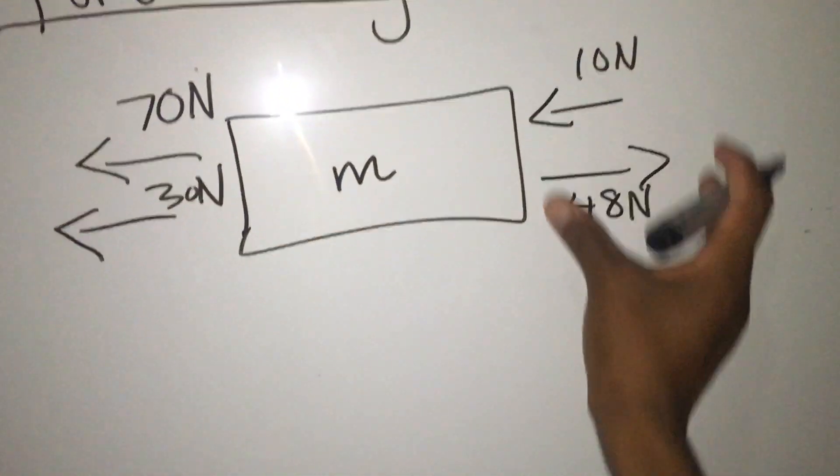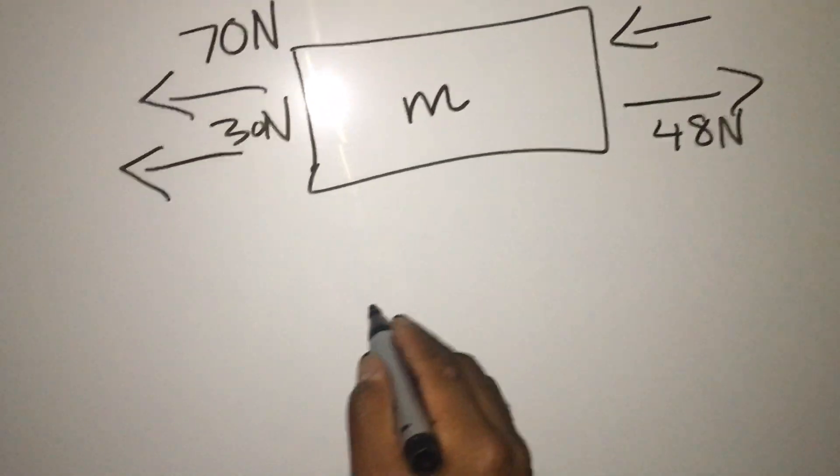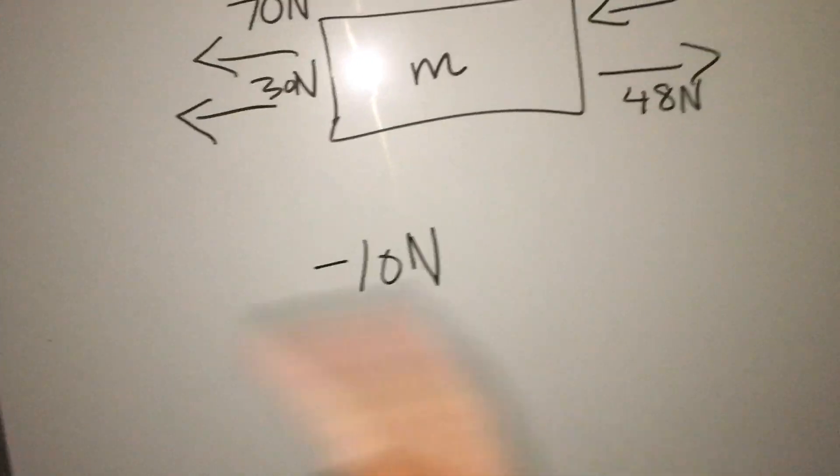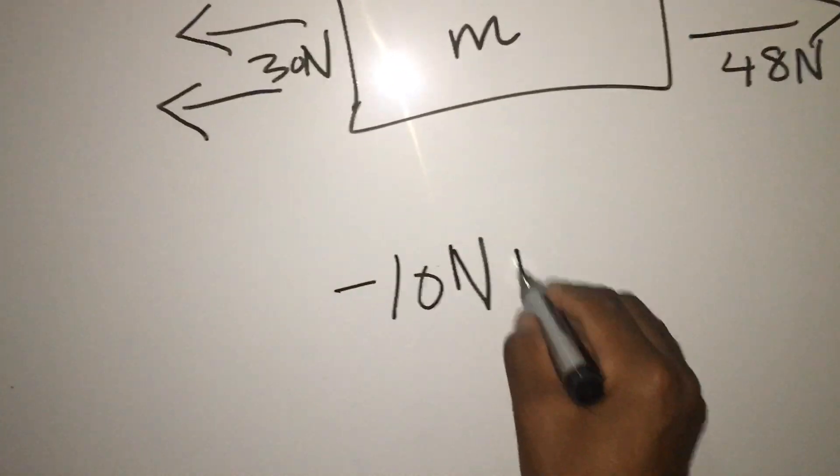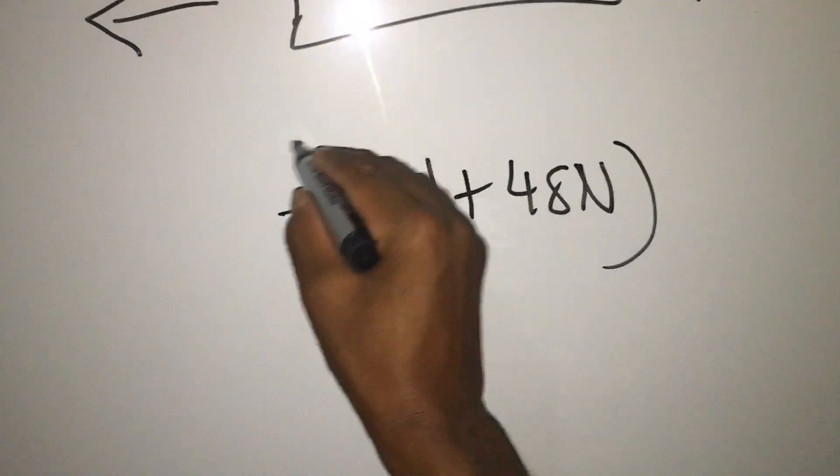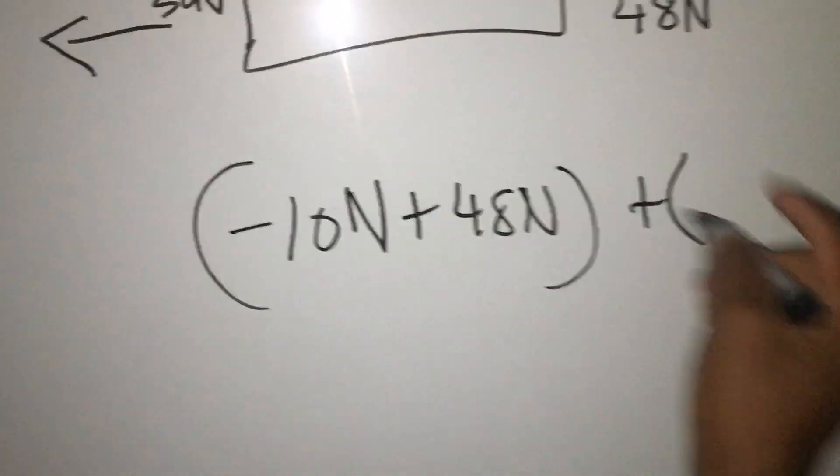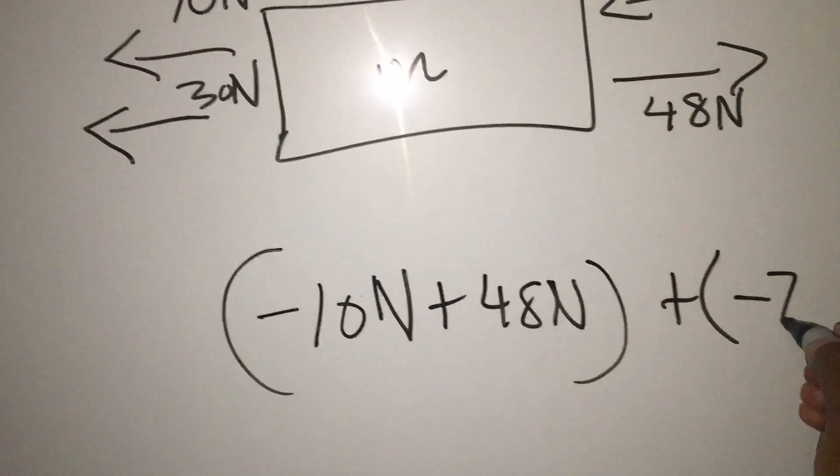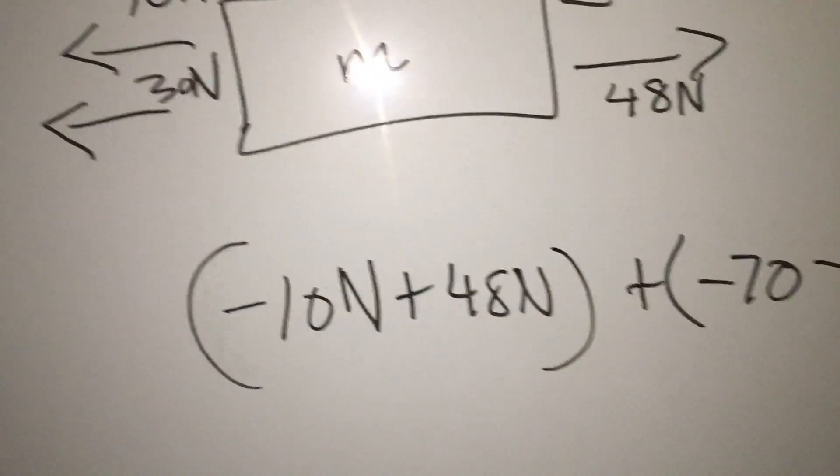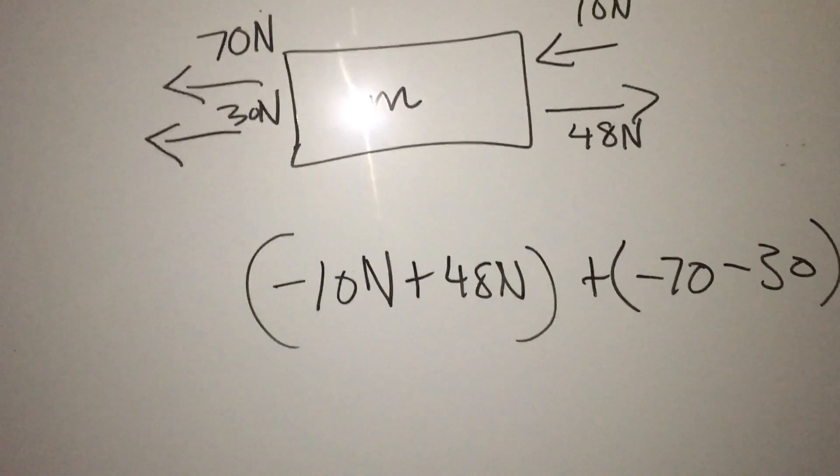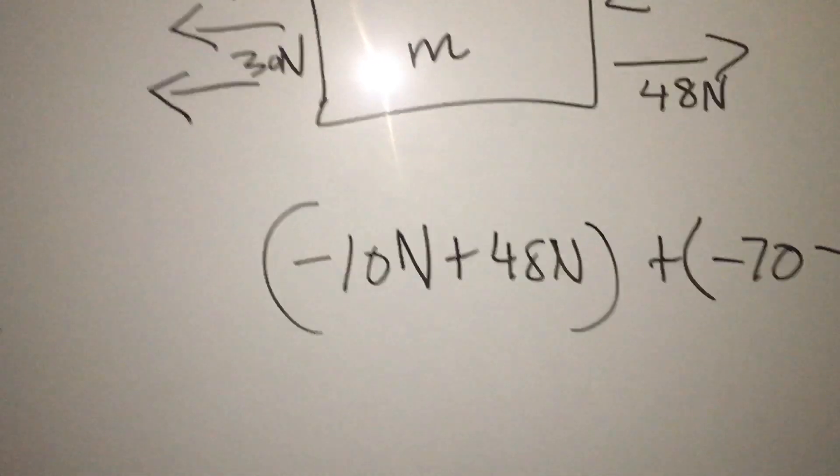I said you always start dealing with the things from the right-hand side. So we are going to have negative 10 newtons because it's opposing the direction. It's 48 newtons because it's going like that. Then plus this side: negative 70, negative 30. Mind you, because all these ones are going that side. So we are going to have minus 10 plus 48. That's obviously 38 newtons.